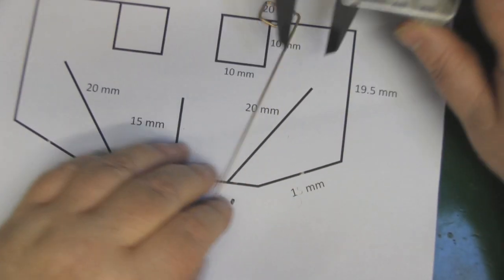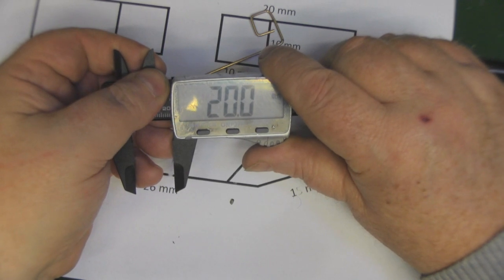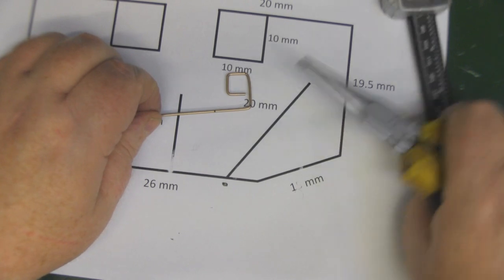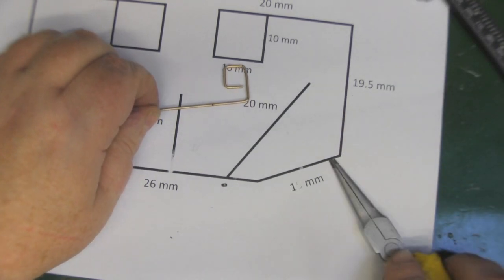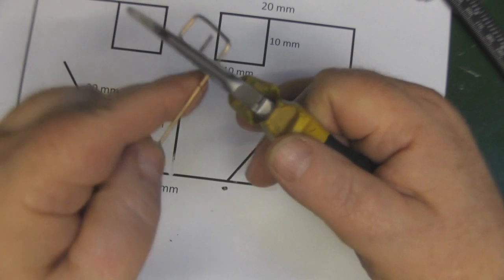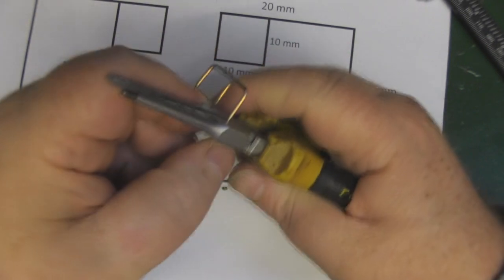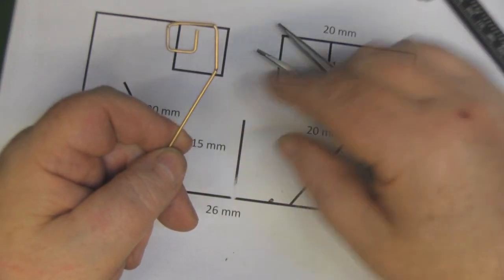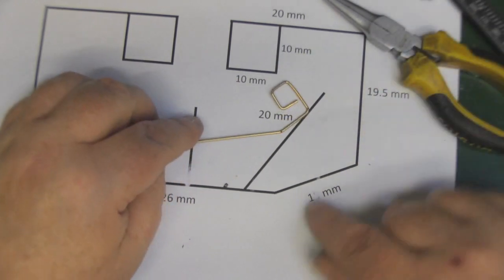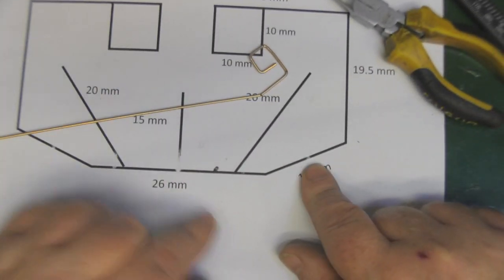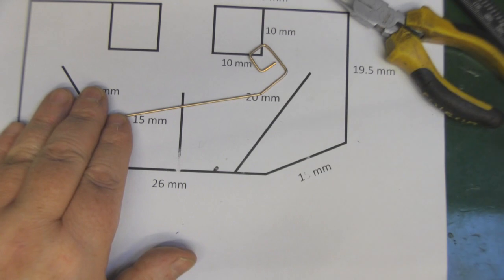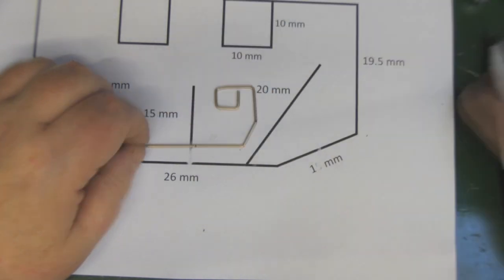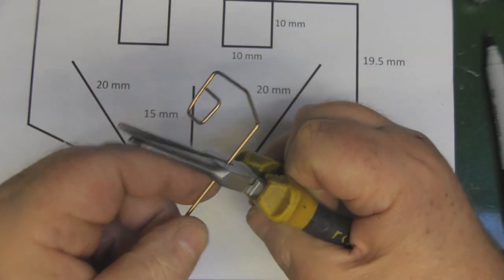Next we've got 19.5 millimeters. This time it's not quite a right angle bend, we've got an angle going on here, so I'm just putting a slight bend in like that. We can alter the angle when we've got it all constructed later. Next we want 15 millimeters measuring off from here to here, and again not quite a right angle bend.